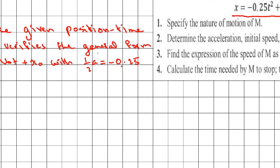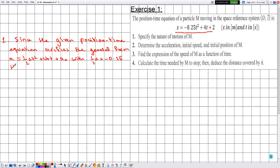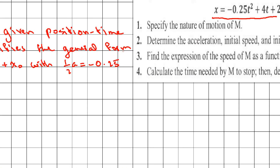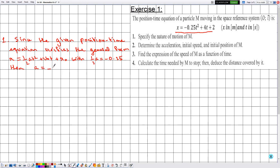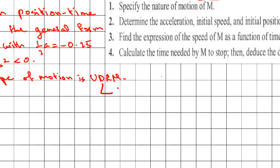Knowing that ½a = -0.25, we multiply both sides by 2 to get a = -0.5 m/s². Since this acceleration is negative, the type of motion is UDRM, where D stands for decelerated.